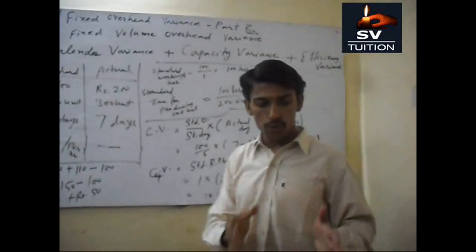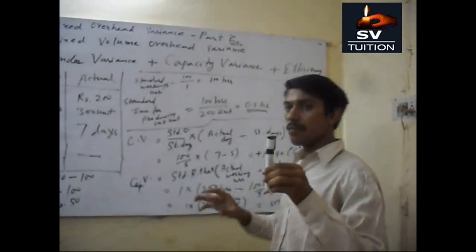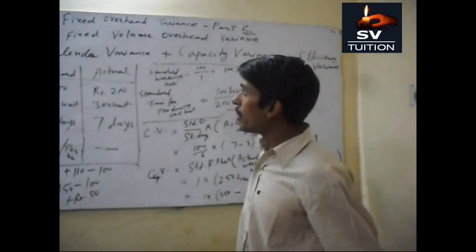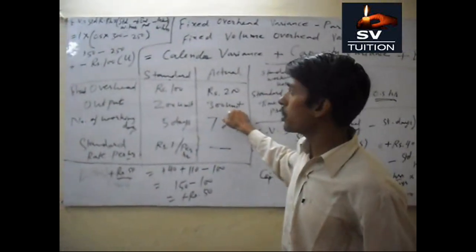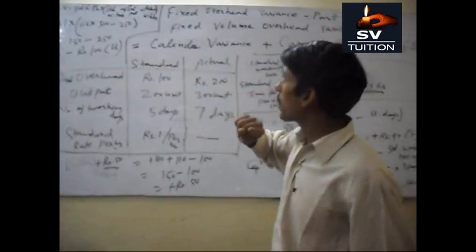For producing 1 unit of pen we need 0.5 hour. If we multiply this to actual production and minus actual working hours.